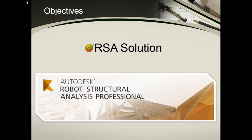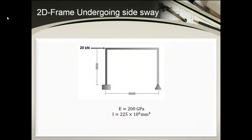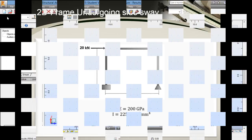These are the reactions obtained from the analysis. We will now switch to the Robot Structural Analysis software and perform the structural analysis. Note that the 2D frame is made of steel with a modulus of elasticity of 200 GPa.